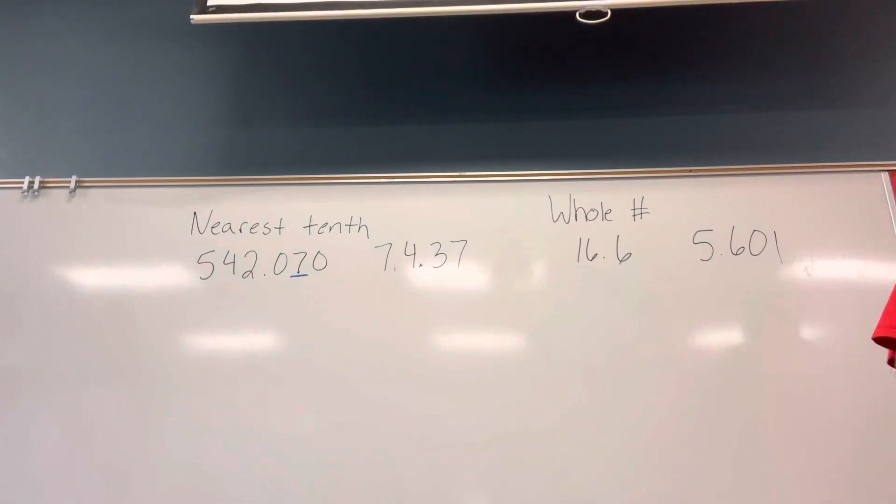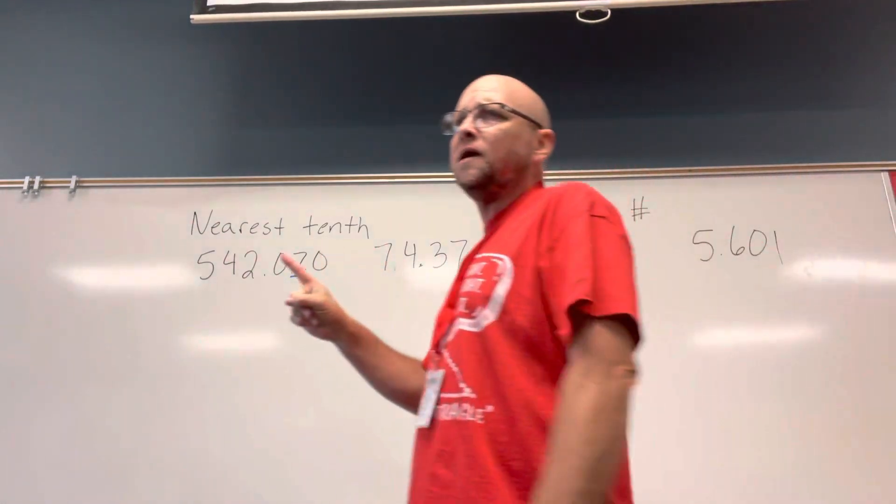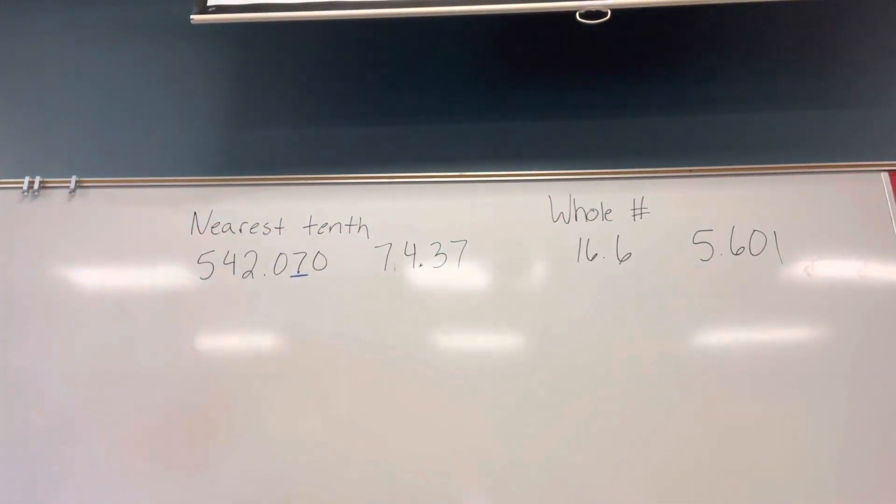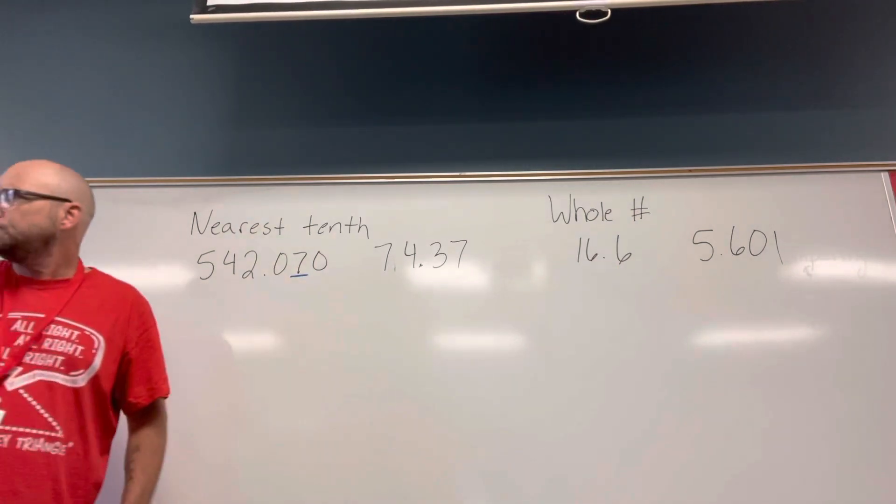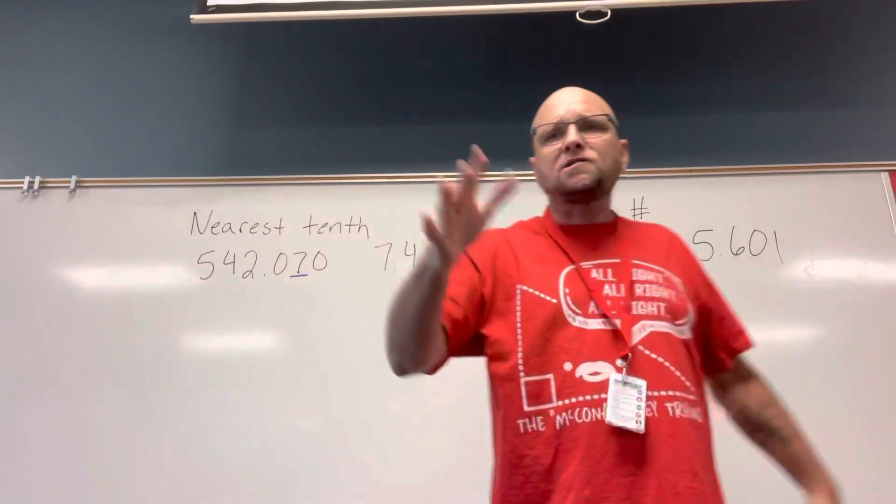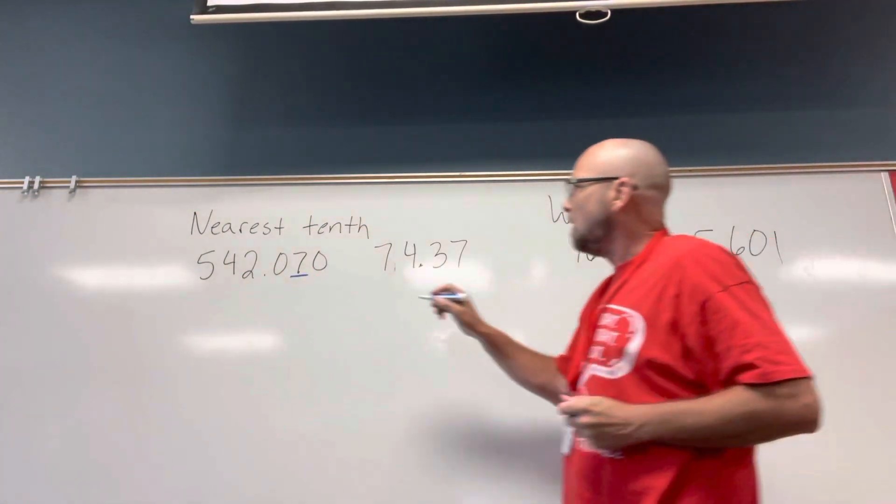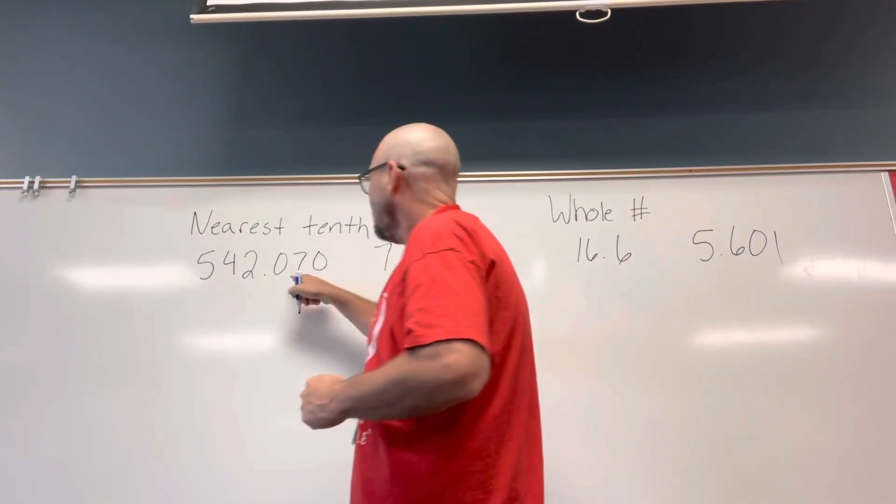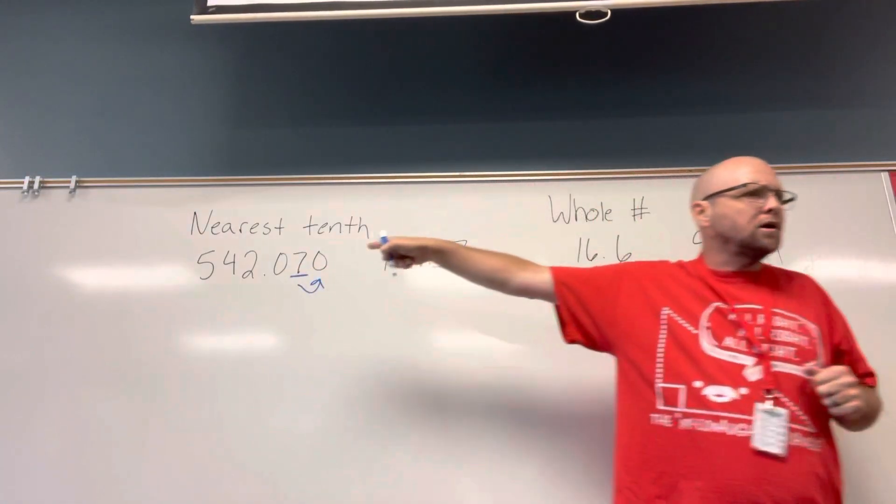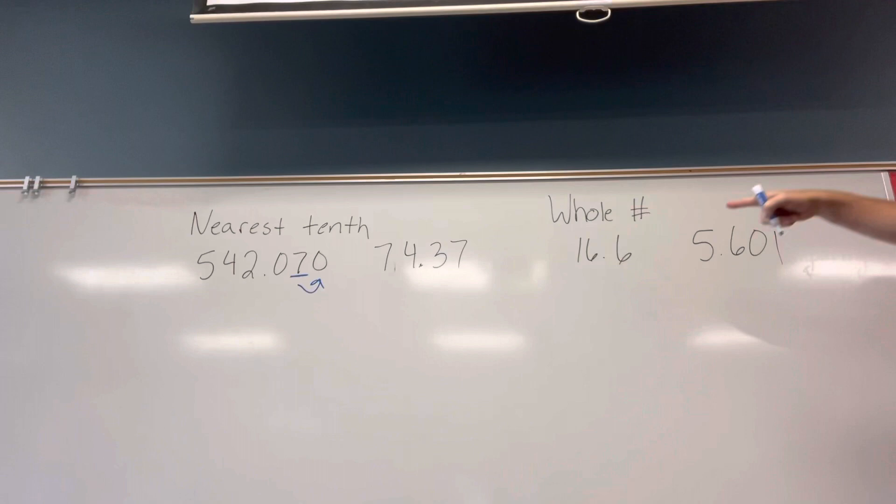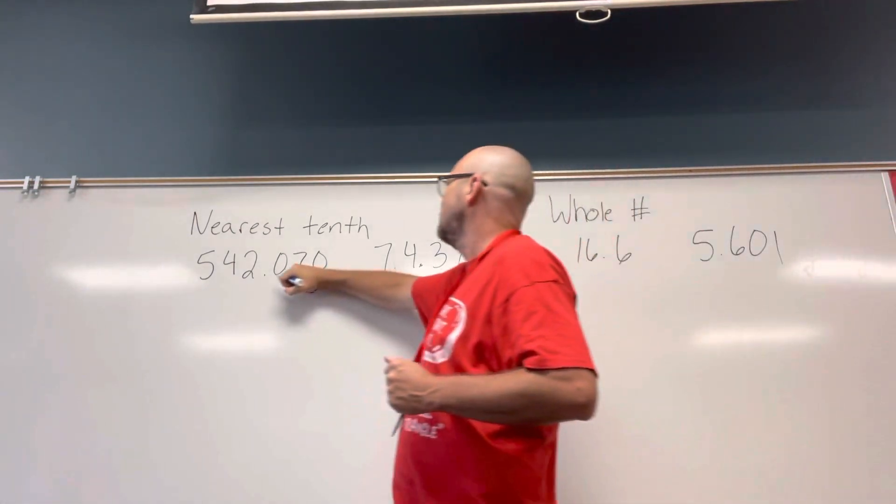So, I am going to either add one to the tenths place. I need eyes on me. I'm either going to add one to the tenths place, or I'm going to leave the tenths place the same. Okay, and as our note said, and as you've done since you were four months old, you look behind it. Now I'm looking at what place value am I looking at? Oh, I'm in the wrong place value, aren't I? Nearest tenth. All right, forgive me.